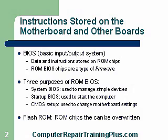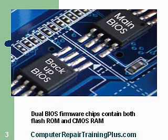Now the CMOS setup is used to change settings in our motherboard. We can configure the motherboard using the CMOS. Now Flash ROM — these are ROM chips that can be overwritten so that we can update our ROM BIOS. Gigabyte motherboards utilize what's called a dual BIOS. These are firmware chips that contain both the Flash ROM and the CMOS RAM.